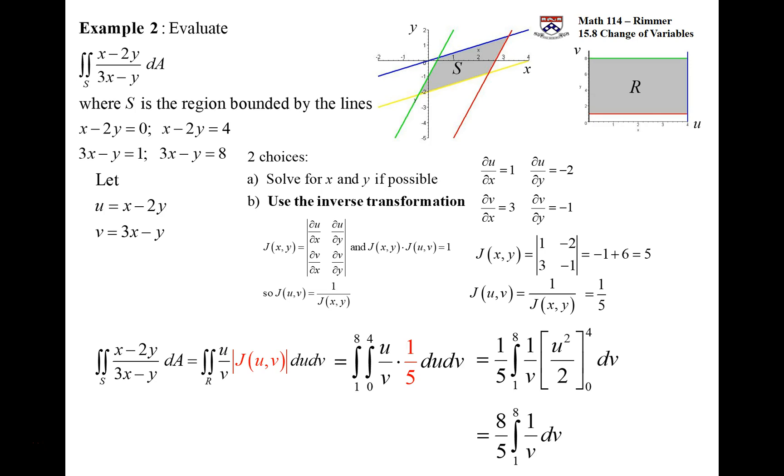You put in the eight and you put in the one. Natural log of one is zero. So there's your answer: eight fifths times the natural log of eight.